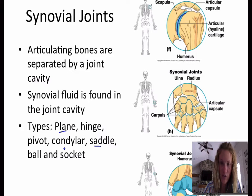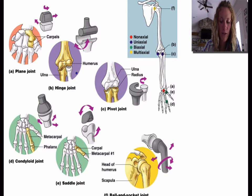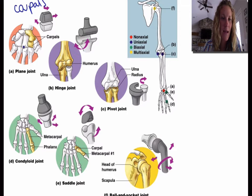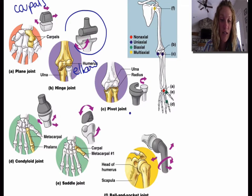We'll go into them right here. A plane joint — an example would be the wrist or the carpals. A hinge joint — a good example of that would be the elbow. A pivot joint — you could say the ulna and the radius are a pivot joint, and in addition to that, the atlas and axis are also a pivot joint.